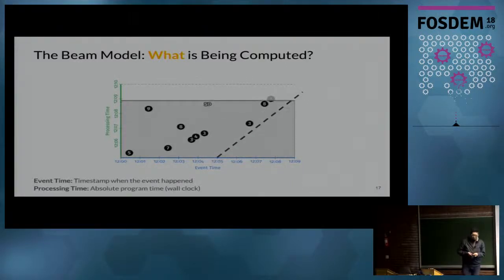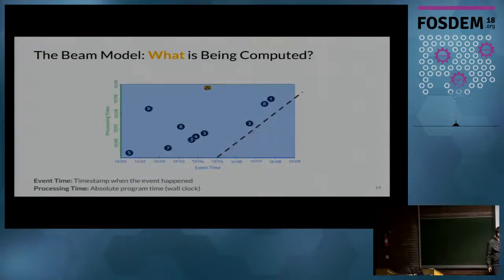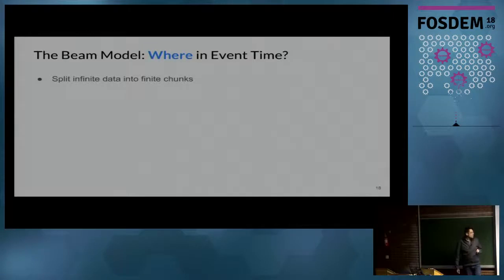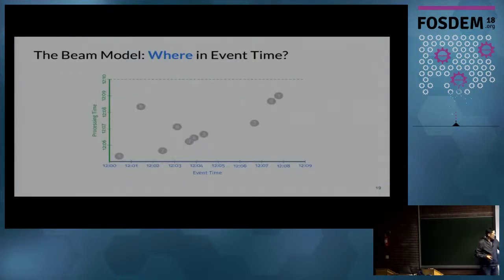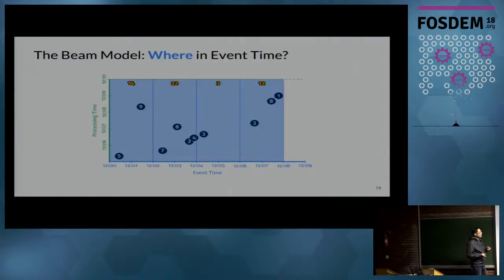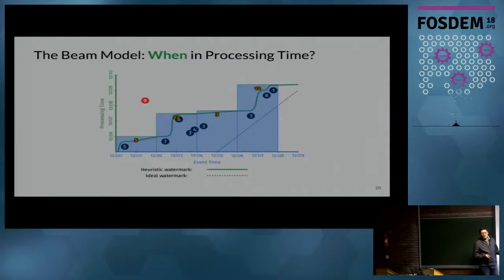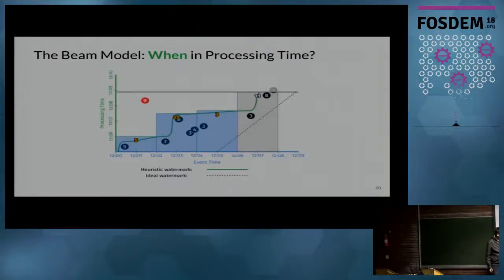We are trying to sum numbers arriving continuously in a stream, but we don't know when to calculate. So we can say: I want results every two minutes, grouping events into two-minute windows and summing them. The watermark is a line indicating that no more events are arriving for a window. When a window completes and there are no more events, we materialize the sum.